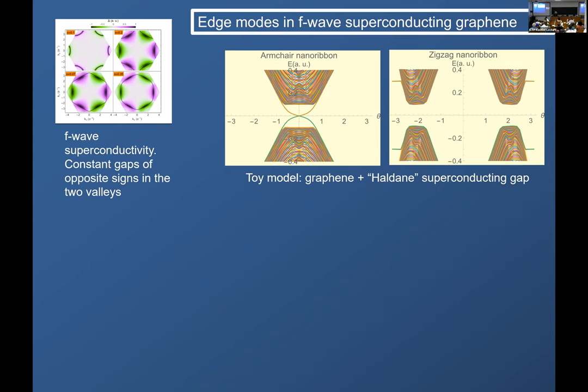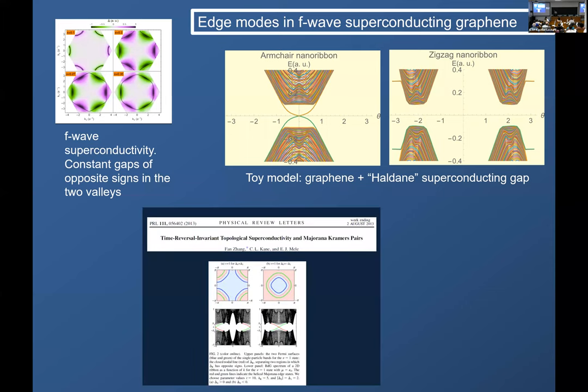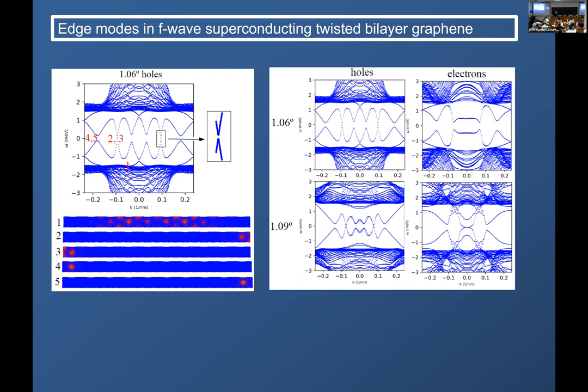Let me first—we first studied a toy model which is just graphene plus a Haldane superconducting gap, which means that the superconducting gap has opposite signs in the two valleys. And notice that these are calculations for an armchair edge. Notice these edge modes—these are Majorana edge modes only in an armchair edge. And that is not quite the same as what has been studied in this paper by Tian and Mele. They are protected. These edge states in the middle of the gap are protected by the symmetries of the armchair edge, and they are not present in the zigzag edge.